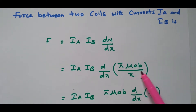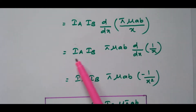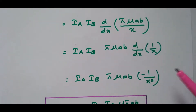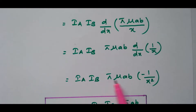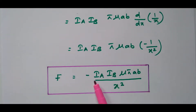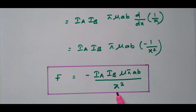Since μπab is constant, we differentiate only 1/x with respect to x, which gives minus 1/x². So F equals IA times IB times μπab times minus 1/x². The final expression for force between the current loops is F equals minus IAIBμπab divided by x². This force depends upon the current in each conductor, the radius of each loop, and the square of the center-to-center distance between the loops.